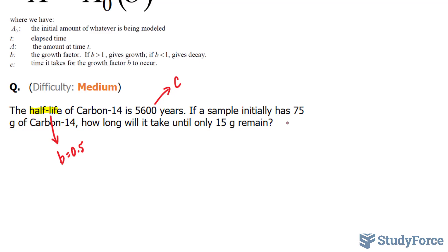If a sample initially has 75 grams of carbon-14, 75 grams represents your initial amount. So this will represent A subscript 0. How long will it take until only 15 grams remain? This tells us the final, so A.